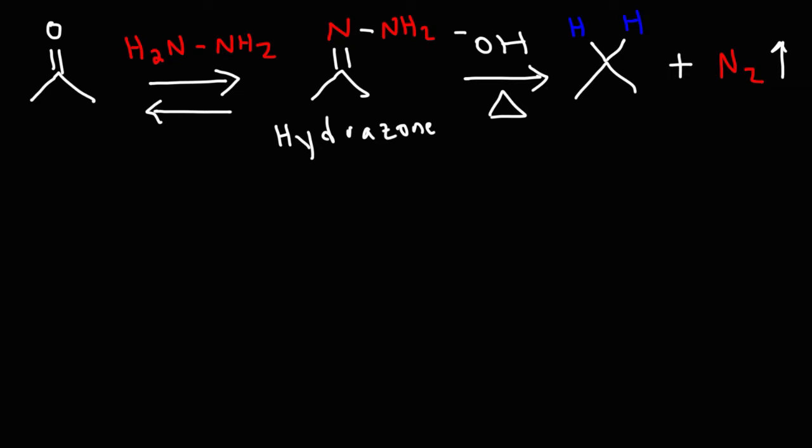Once we get this hydrozone, the second step is to add a strong base under high temperature conditions. The heat will favor the formation of nitrogen gas, which will escape from the reaction, making the second step irreversible. That's an overview of the Wolf-Kishner reduction reaction.